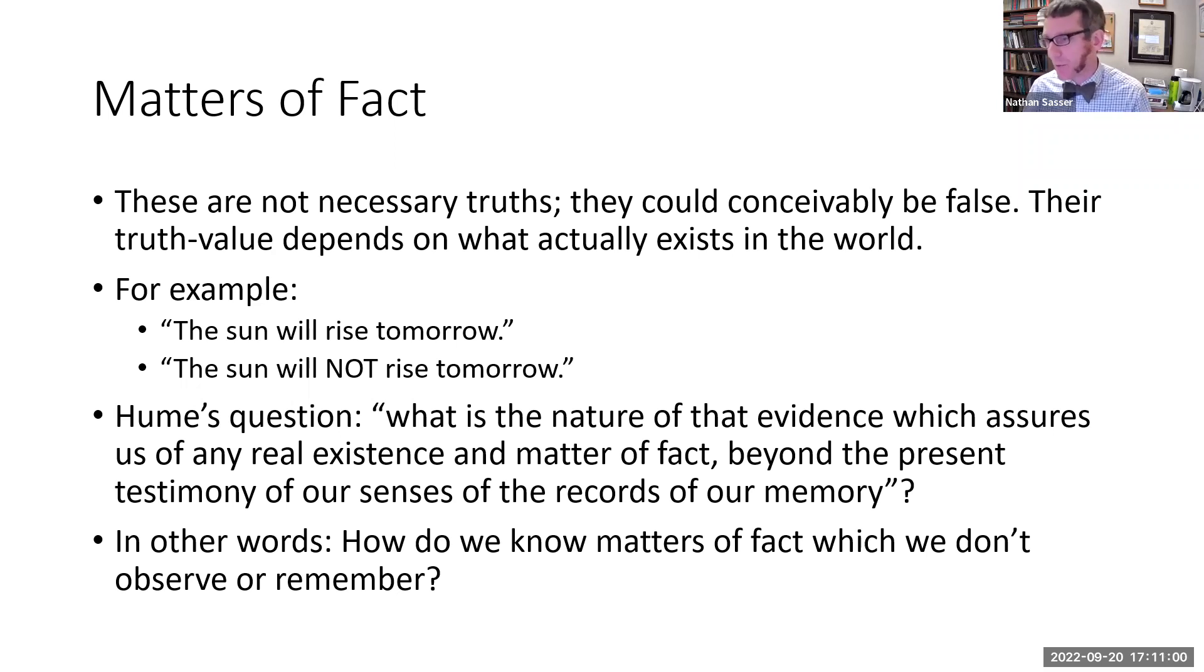All of those distinctions are just meant to set up Hume's question. What is the nature of that evidence which assures us of any real existence and matter of fact that goes beyond present testimony of our senses or the records of our memory? In other words, knowing relationships between ideas is easy. We can do that by intuition or demonstration. But how do we come to know matters of fact, specifically those matters of fact which we aren't currently observing and that we don't have any memory of? For example, matters of fact about whether the sun is going to rise tomorrow or whether the sun is still out right now or whether it's exploded in the sky and no longer exists. How do we know that kind of stuff?